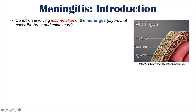One of those layers is known as the pia mater, another is the arachnoid mater, and the other is the dura mater. These three layers cover the brain and also extend down through the spinal cord, so they cover the spinal cord as well. This will be important when we talk about the signs and symptoms of meningitis.